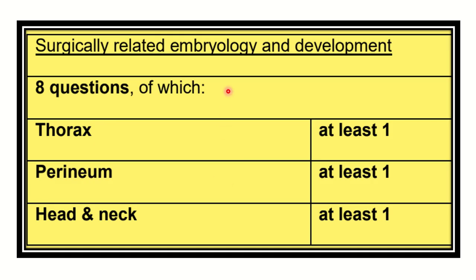Embryology and development contributes 8 questions total. Among these, one must be from the thorax, one from the perineum, and one from the head and neck area. We need to read embryology for all parts of the body, but it is not very deep since this is an entrance exam and the questions are more superficial. Don't be worried — it will be very easy questions in the exam.